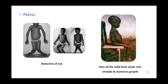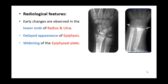Overall, a child with rickets appears very weak and sick, with stunted growth, and the child is often irritable. Regarding radiological features, early changes are observed in the lower end of the radius and ulna, where there are changes in the epiphyses, including delayed appearance and widening of the epiphysial plate.